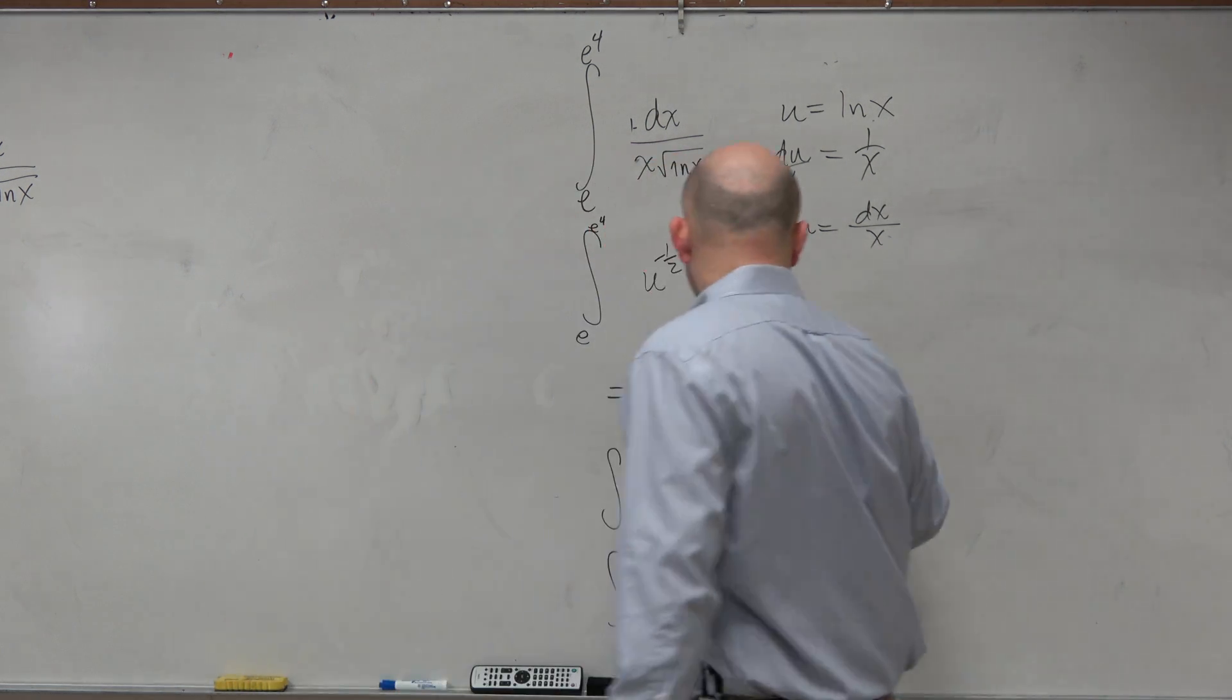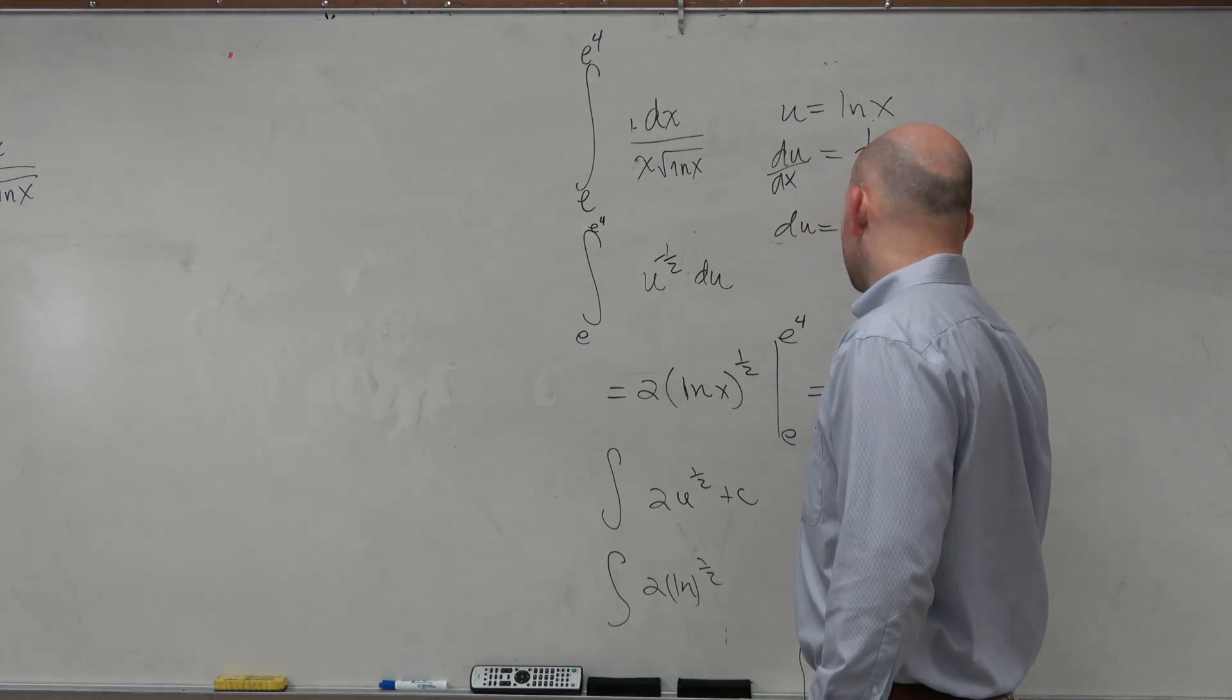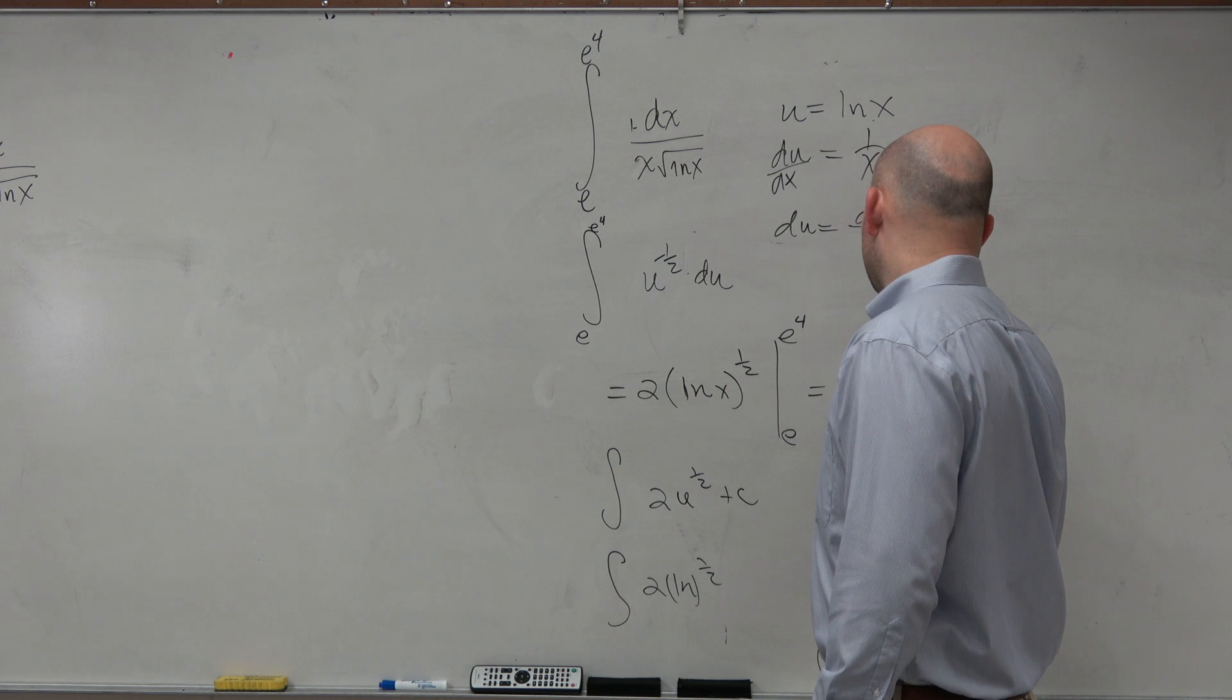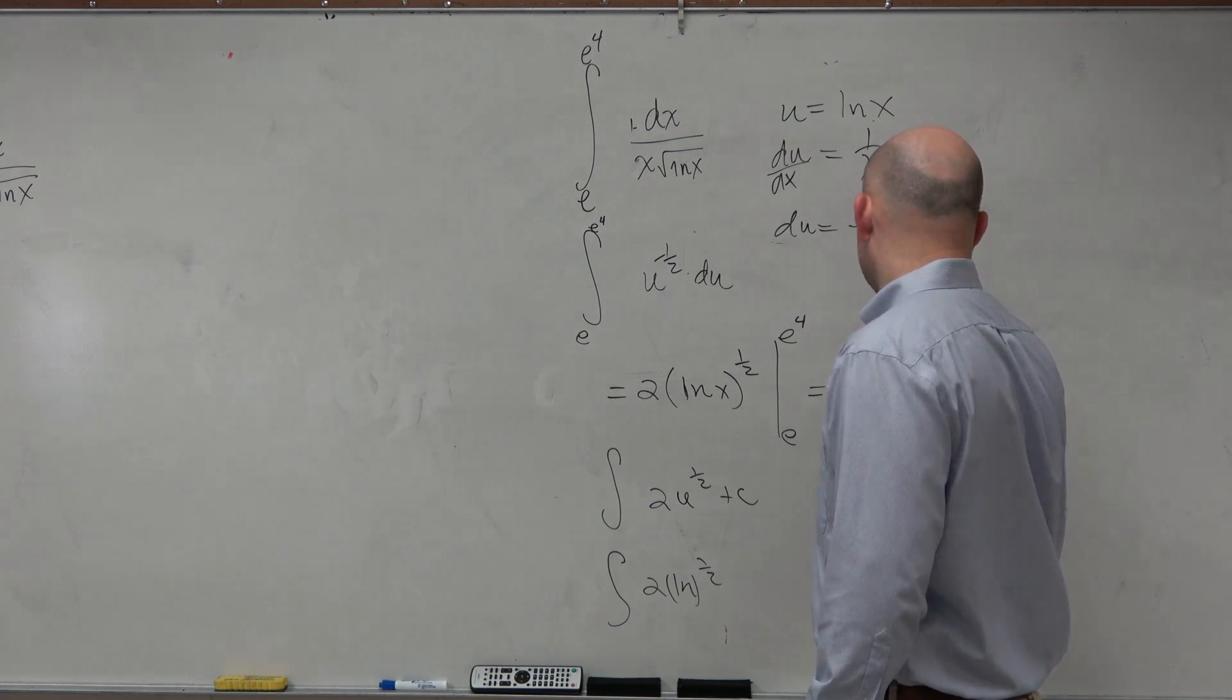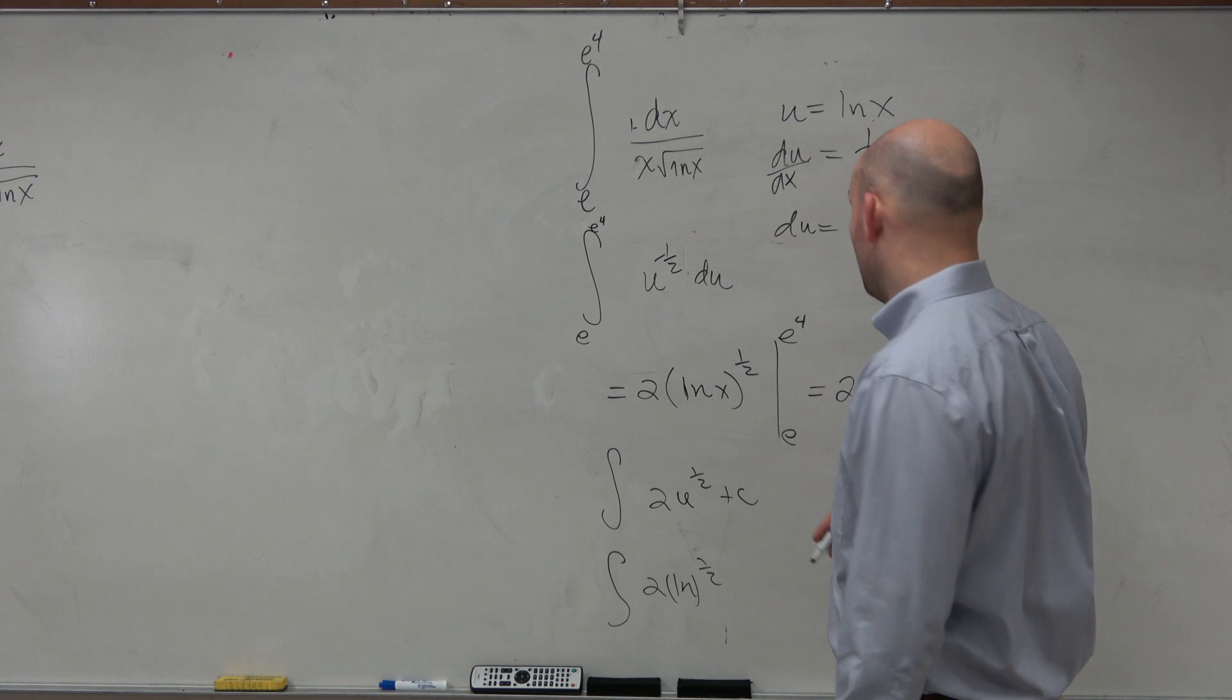So now let's go and evaluate this, though. So therefore, that is 2 to the ln of e to the fourth, raised to the 1 half, which is really the square root.